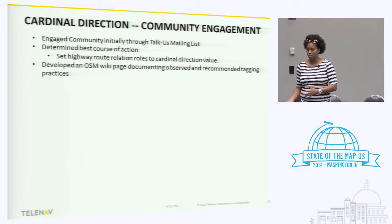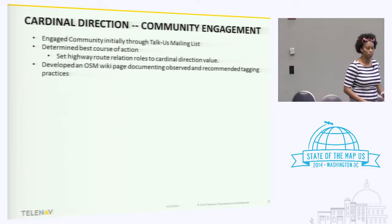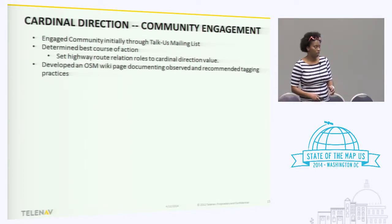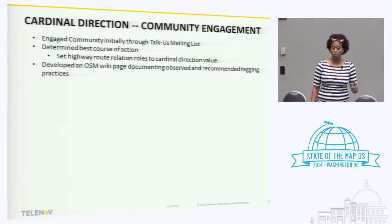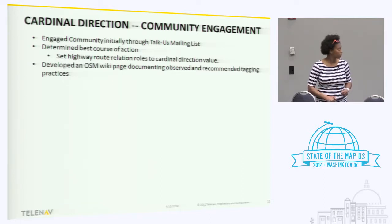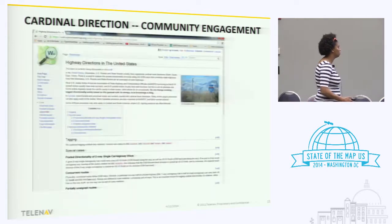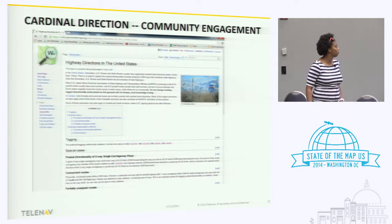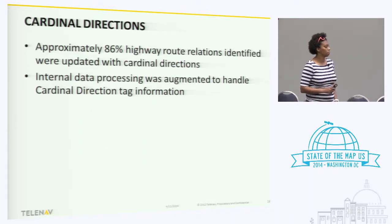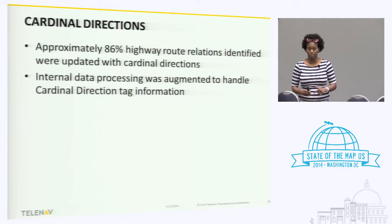One was sending a message to the OpenStreetMap mailing list saying, 'hey, we want to update the cardinal direction information — this is the observed methods that we've found, and this is our plan of attack.' The second way was updating the OSM wiki with our observations and the particular convention that is preferred in updating the data. Nearly 90% of the highway route relations that we identified as lacking cardinal directions were updated by our group. We also augmented our internal processing of OSM data to process the cardinal directions, and the routing engine was also accommodated to handle cardinal directions.